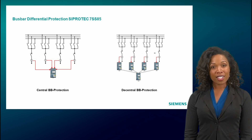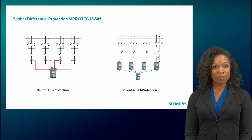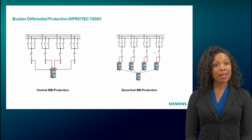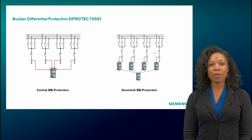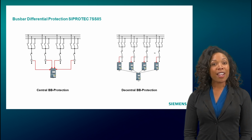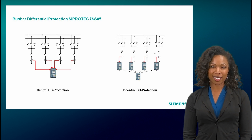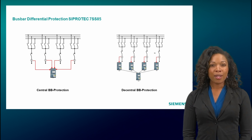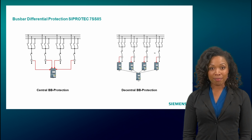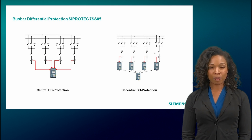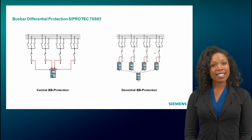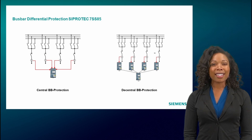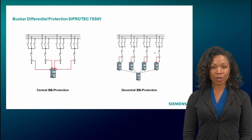Like the differential protection devices already discussed, the 7SS85 busbar protection is based on Kirchhoff's first rule, which states that the sum of all currents at a node must be equal to zero. The node in this case is the busbar. If the busbar consists of several busbar sections, each section again represents its own node, which must be calculated by the busbar protection. This means that for each individual section, the busbar protection must check whether the sum of the incoming currents is equal to the sum of the outgoing currents. The number of possible busbar sections is a selection criterion when determining the configuration.